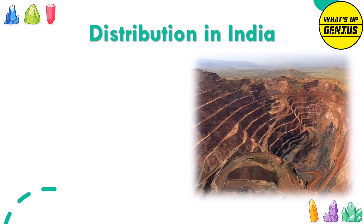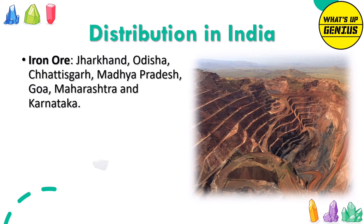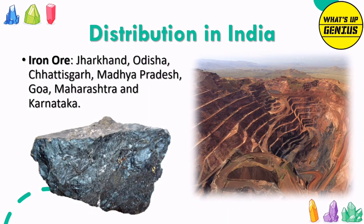Distribution of Minerals in India. Iron ore is found in Jharkhand, Orissa, Chhattisgarh, Madhya Pradesh, Goa, Maharashtra and Karnataka.